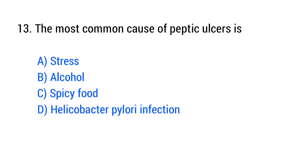Question No. 13. The most common cause of peptic ulcers is? The right answer is Option D: Helicobacter pylori infection.